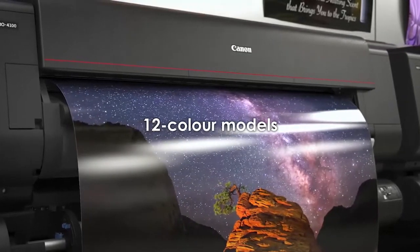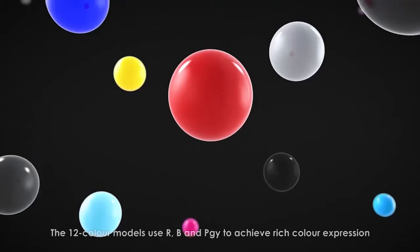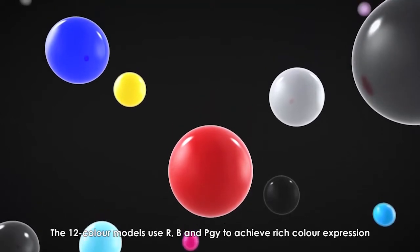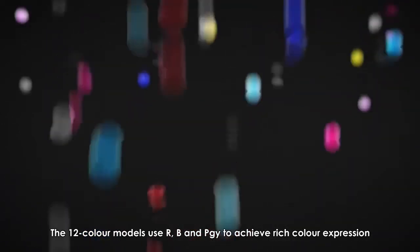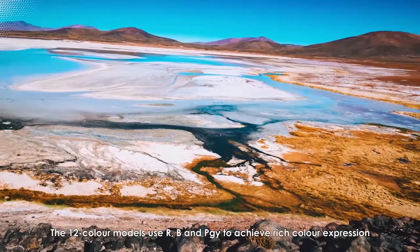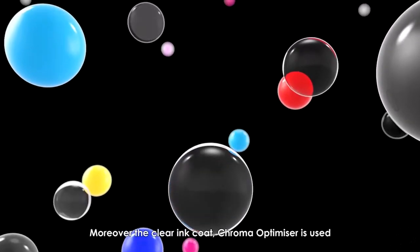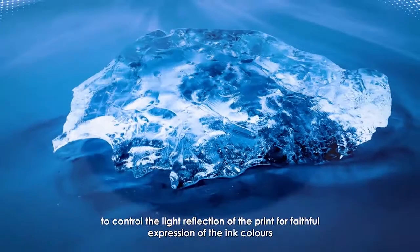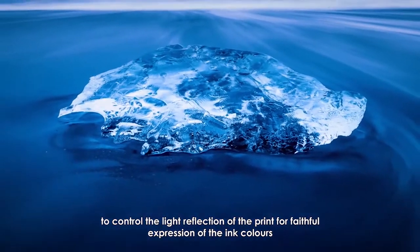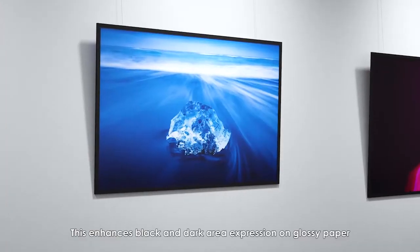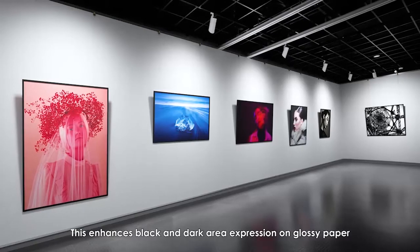The 12-color models use red, blue, and photo-gray to achieve rich color expression. Moreover, the clear ink coat Chroma Optimizer is used to control the light reflection of the print for faithful expression of the ink colors. This enhances black and dark area expression on glossy paper.